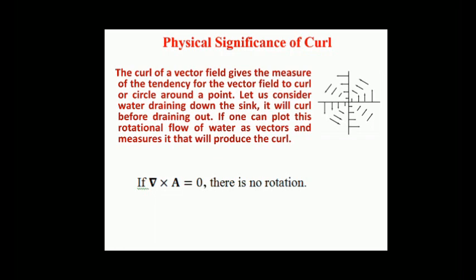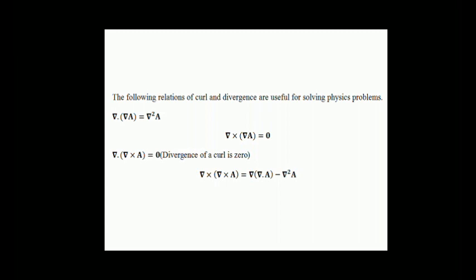The following relations of curl and divergence are useful for solving physics problems: del·(del·A) = del²A; del cross (del·A) = 0; del·(del cross A) = 0, meaning the divergence of a curl is zero. The last relation is: del cross (del cross A) = del(del·A) − del²A.